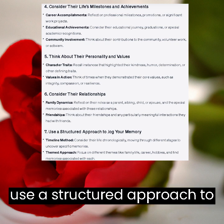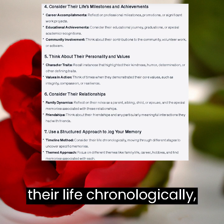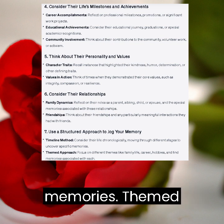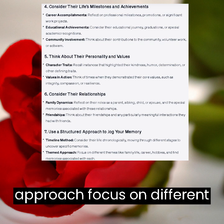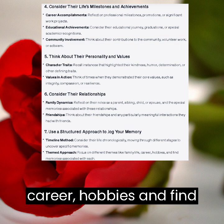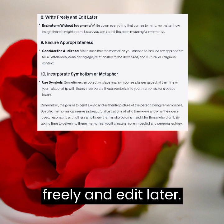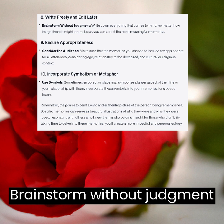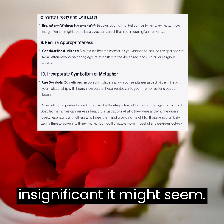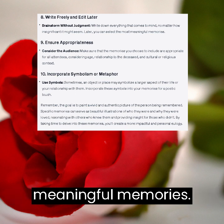Use a structured approach to jog your memory. Timeline method: consider their life chronologically, moving through different stages to uncover specific memories. Themed approach: focus on different themes like family life, career, and hobbies, and find memories associated with each. Write freely and edit later. Brainstorm without judgment: write down everything that comes to mind, no matter how insignificant it might seem. Later, you can select the most meaningful memories.